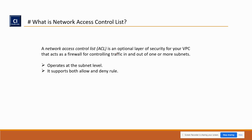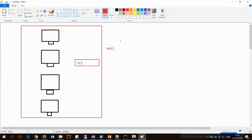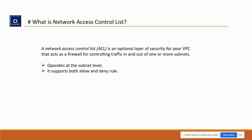The next point: NACL supports both allow and deny rules. In NACL there are two things — allow and deny. You have to manage any traffic based on your requirement. If you want to allow, you can allow. If you want to deny, you can deny it. It's completely up to you — allow and deny are both possible.